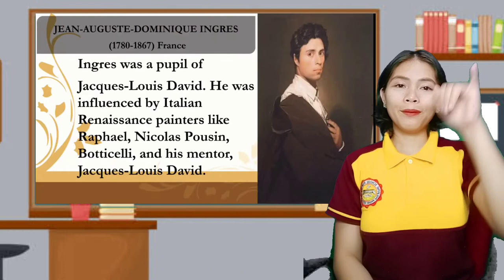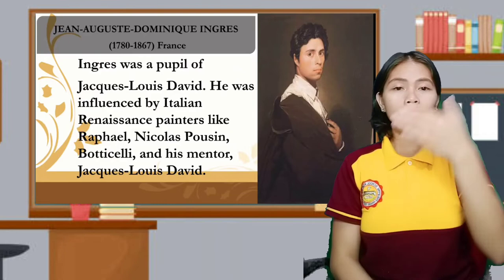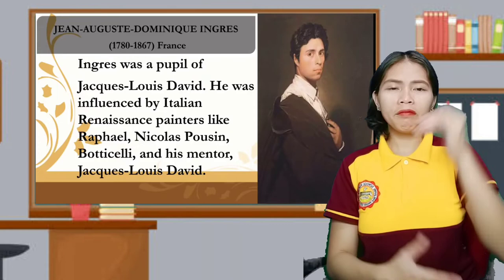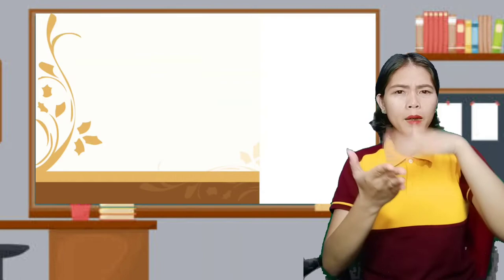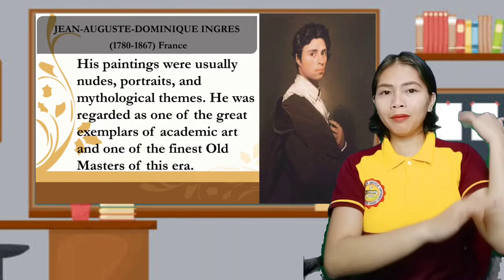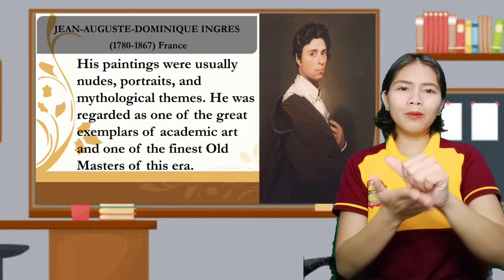Now let's go over to Jean-Auguste-Dominique Ingres's works. Ingres was a pupil of Jacques-Louis David and was influenced by Italian Renaissance painters like Raphael, Nicolas Poussin, Botticelli, and his mentor David. His paintings were usually nudes, portraits, and mythological themes. He was regarded as one of the great exemplars of academic art and one of the finest old masters of the era.